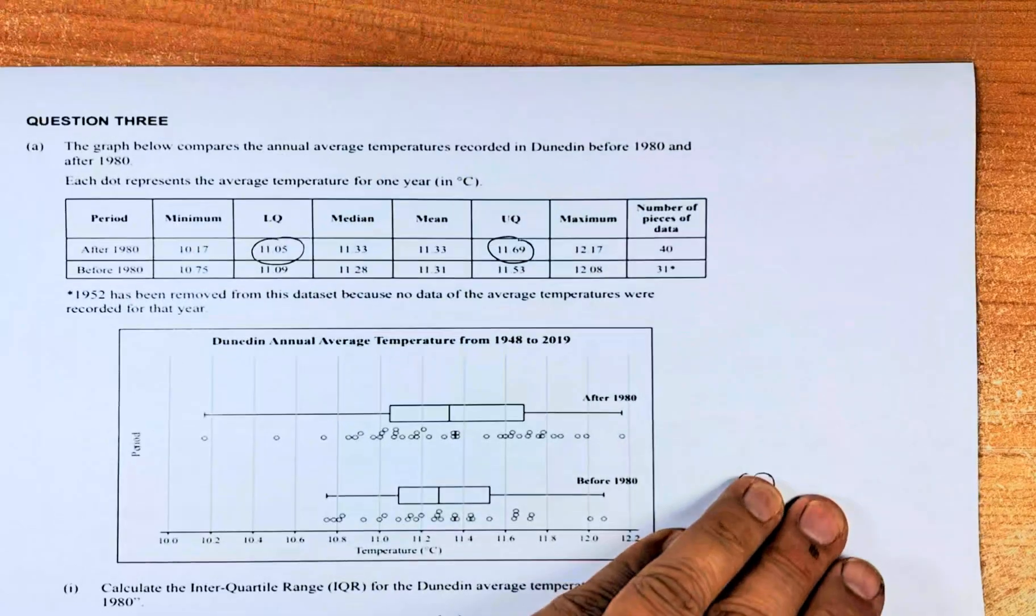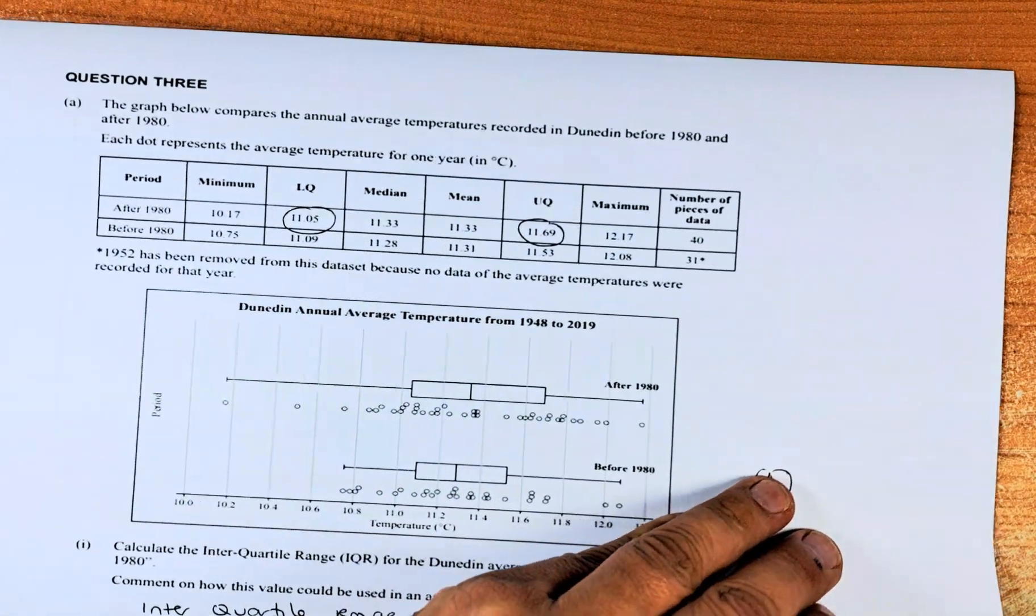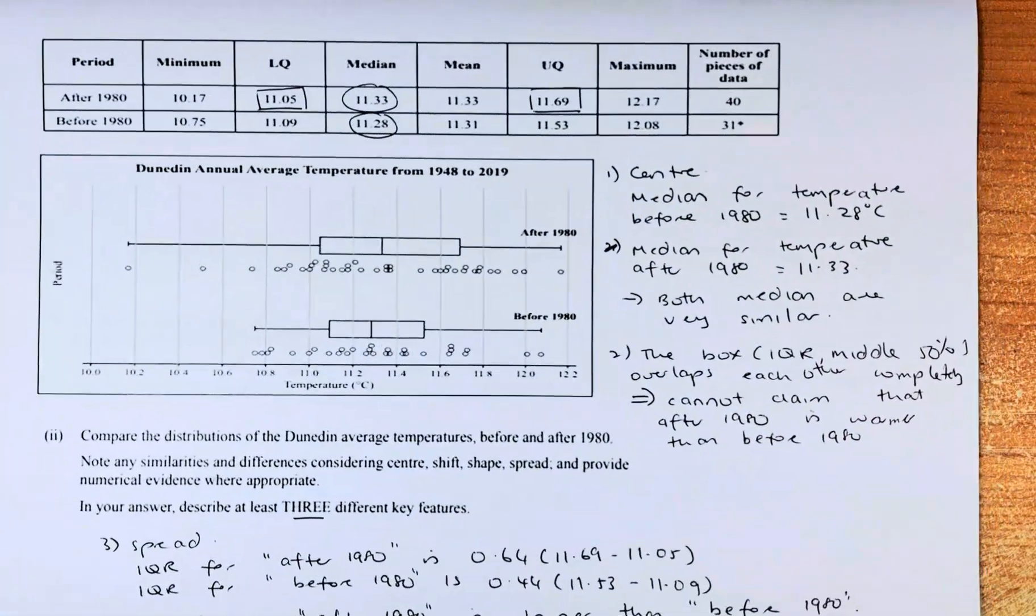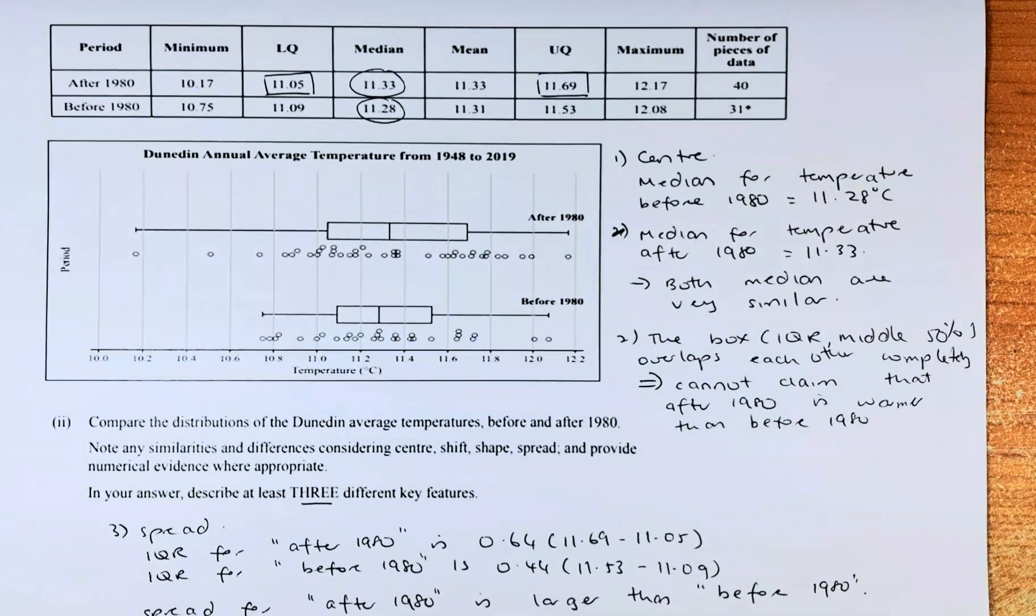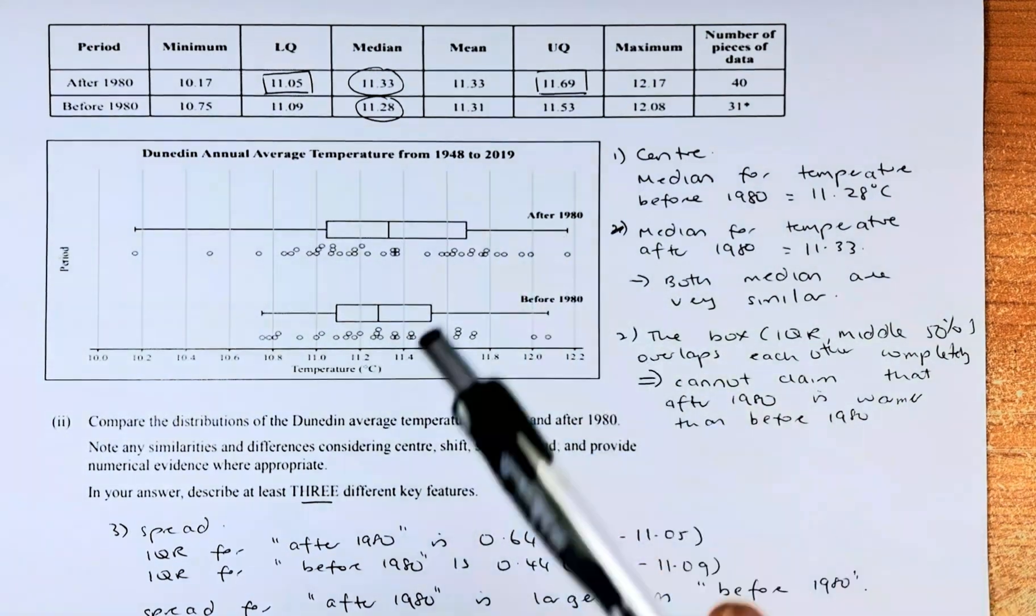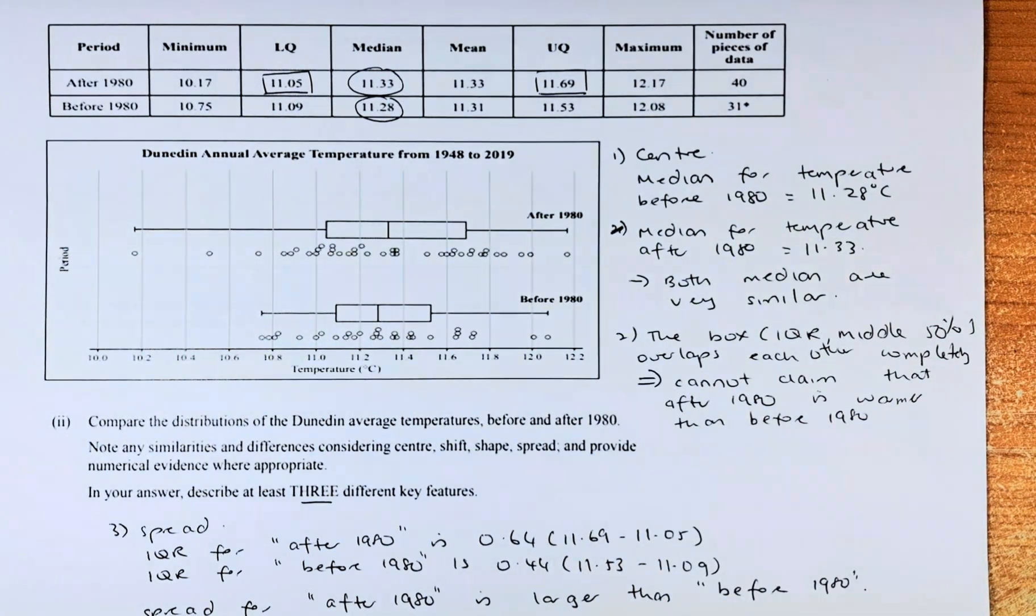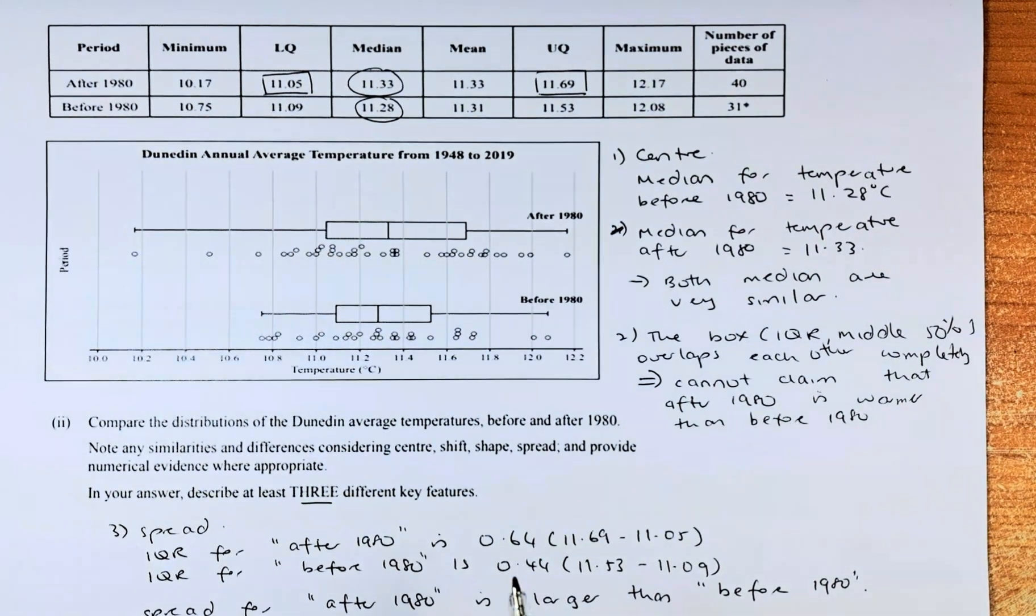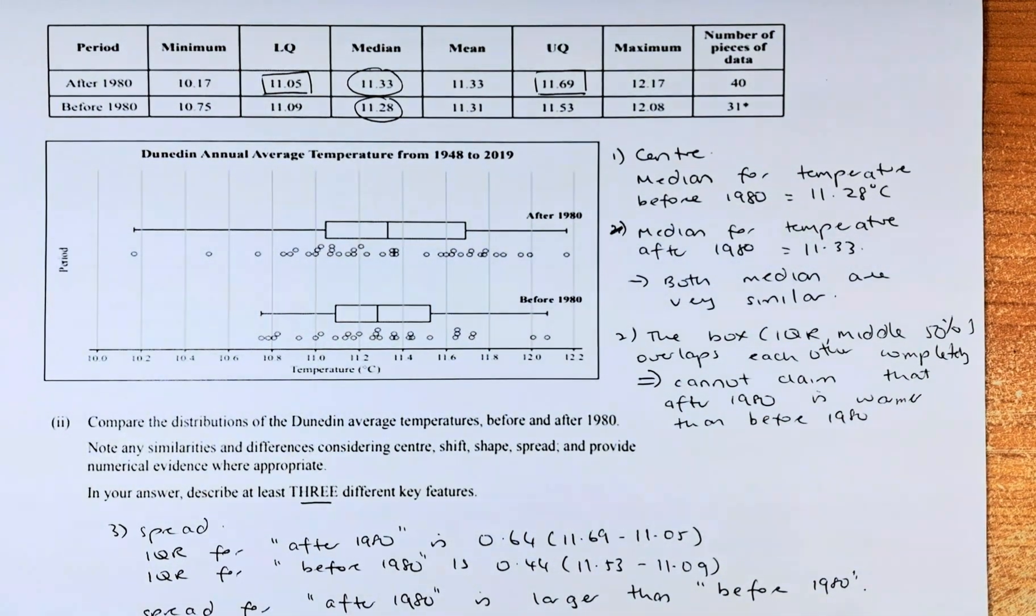The table is still there. So now, compare the distribution of Dunedin average temperature before and after 1980. The before is the bottom and the after was the top. Note any similarities or differences. You can talk about the center, the shift, the shape, the spread, and provide numerical evidence where appropriate. In your answer, describe at least three different key features.